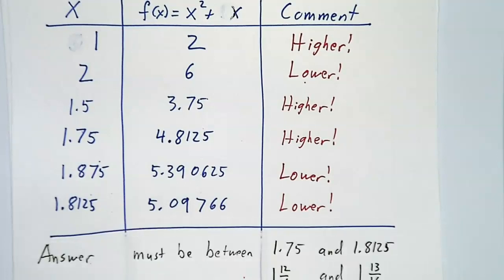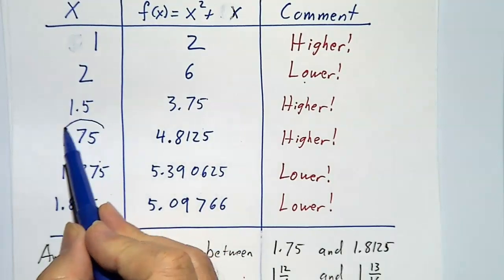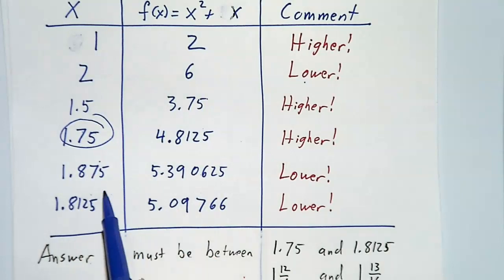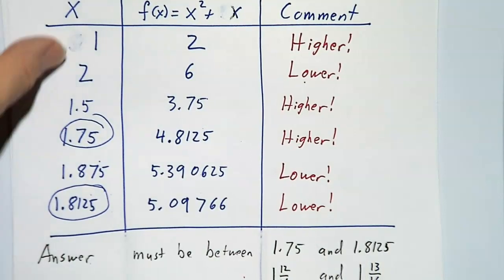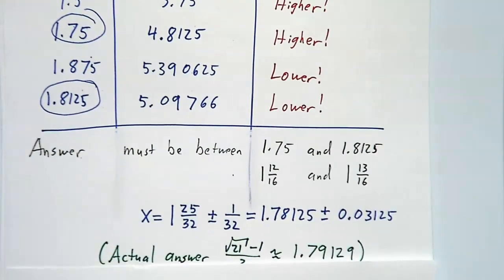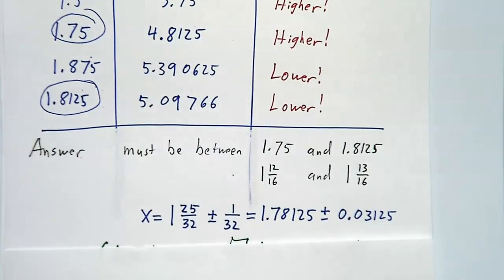And what have we done? At this point, we know that the answer has to be somewhere between 1.75 and 1.8125. We've narrowed it down to a pretty small range. And our best guess is still halfway in between. And we know that it's 1.78125 plus or minus 0.003125. We've got it down to 0.03 or so.